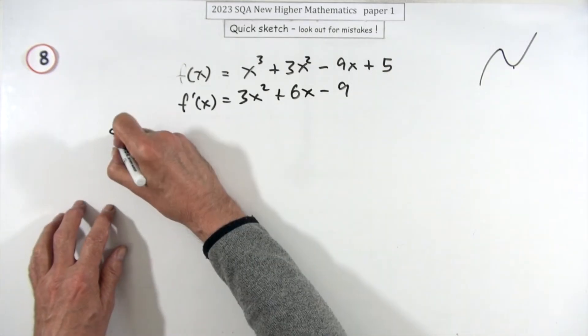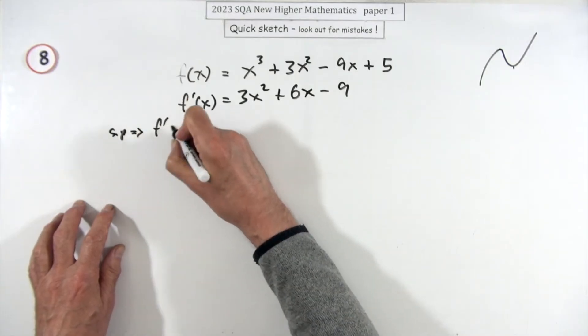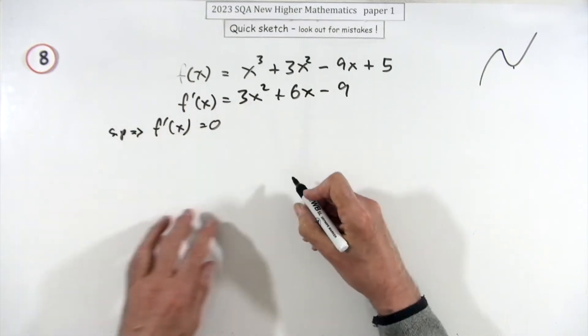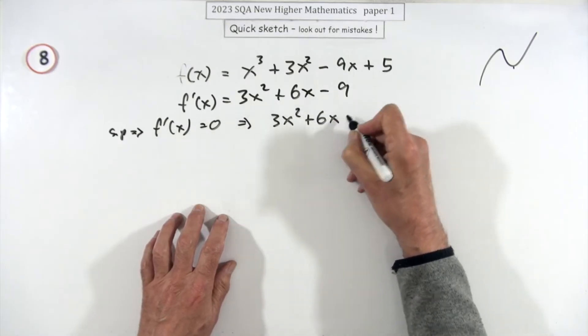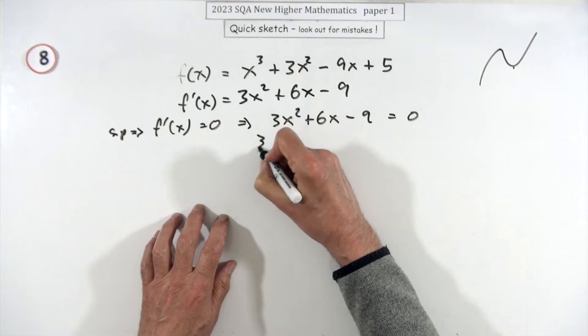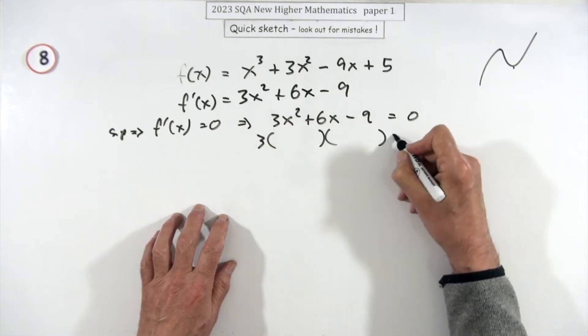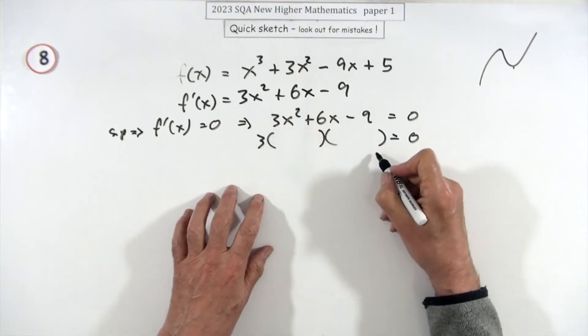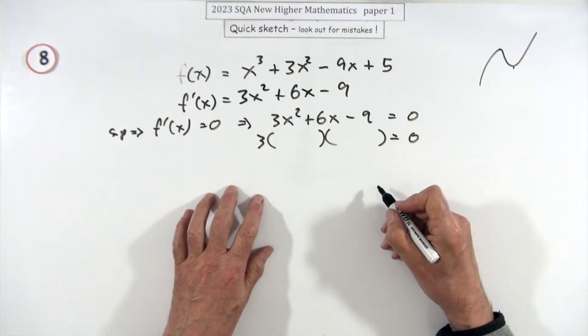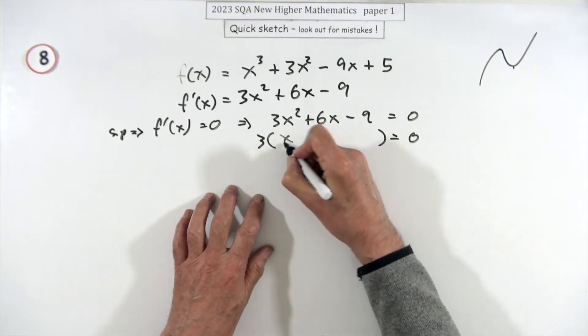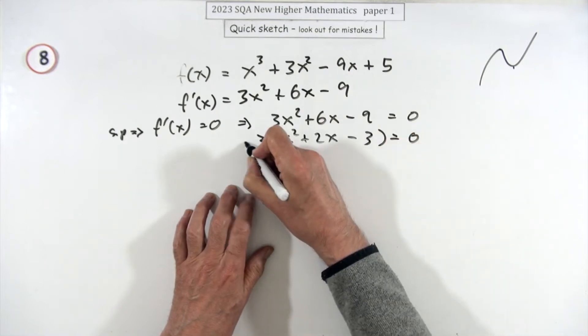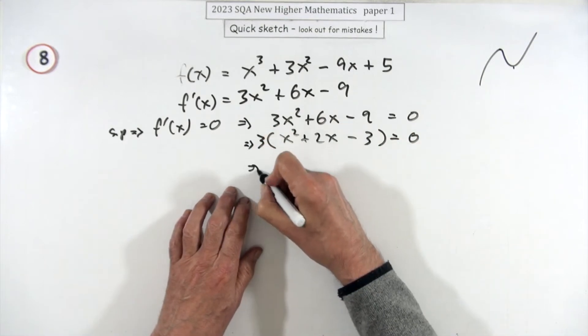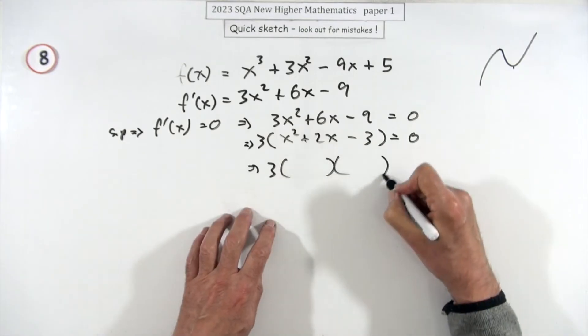Then stationary points mean that f'(x) should equal zero, so that means 3x² + 6x - 9 should equal zero. I'll take the three out because they like that, which leaves you x² + 2x - 3.